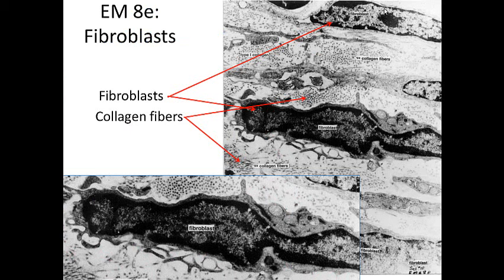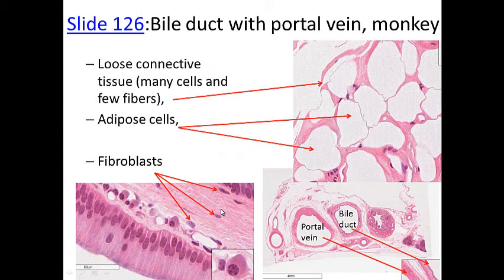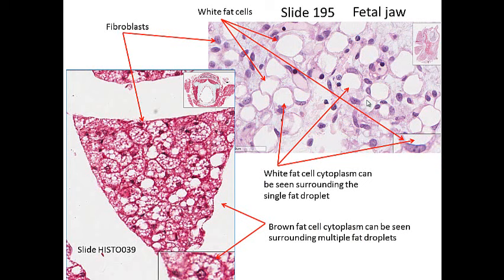In electron micrographs we can see several fibroblasts, their cytoplasm, and extracellularly the collagen fibers. Individual collagen fibers are characteristic — they vary in thickness, but there can be bundles of them. You can see the bundles of connective tissue fibers and the fibroblasts that made them. Some plasma cells are visible in through there as well.